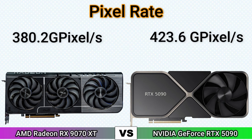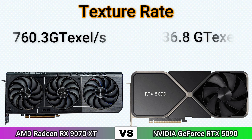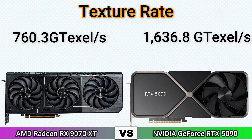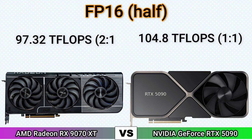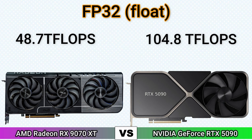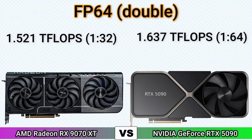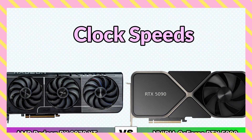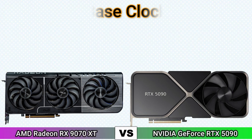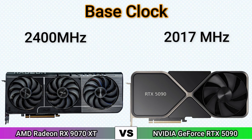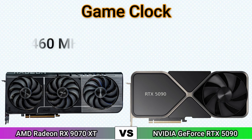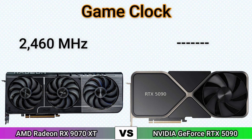Pixel Rate. Texture Rate. FP16 Half. FP32 Float. FP64 Double. Base Clock. Game Clock. Boost Clock.